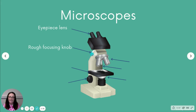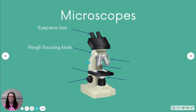This bit here is the rough focusing knob. It's worth saying it could be positioned slightly differently on different microscopes, and the microscope you see in a textbook, have at home, or use in class may not look exactly like this. They will all have similar parts — the rough focusing knob will move the lenses closer to the stage.